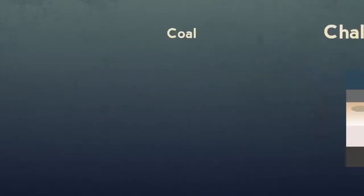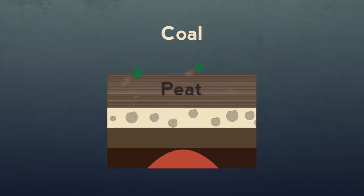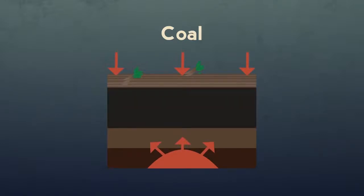Another rock formed by living things is coal and the related fossil fuels. Peat is formed as vegetation in bogland is unable to rot. Under heat and pressure, the peat metamorphosizes into coal.